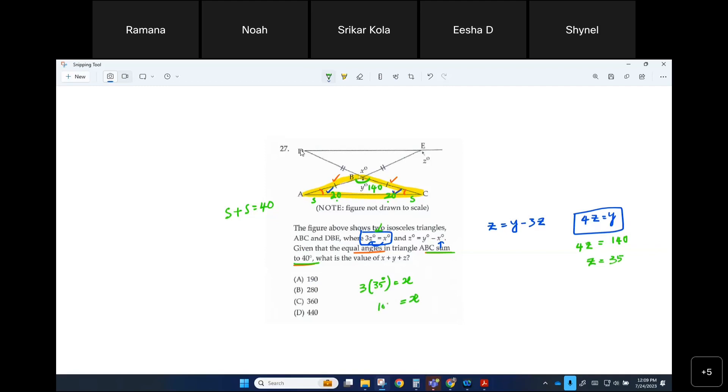Exactly. So now you know x value, you know y value, you know z value. Can you figure out the sum? x is 105, y is 140, and z is 35. So what is the total? It would be 280. That's it.